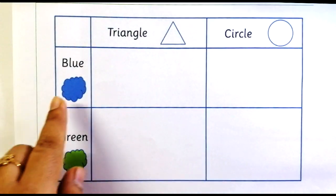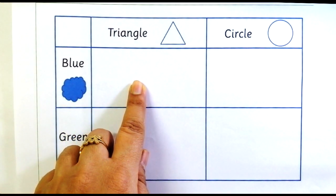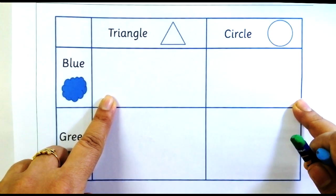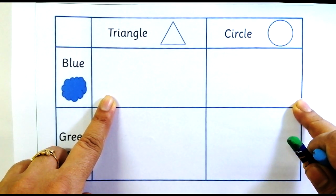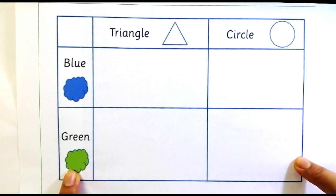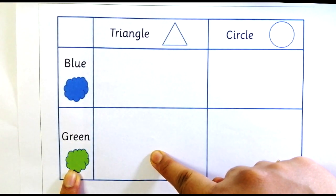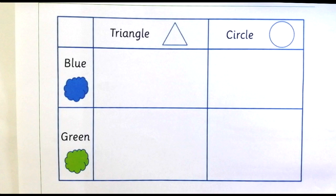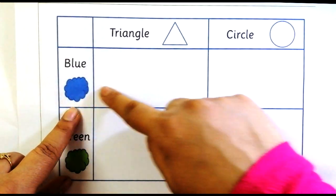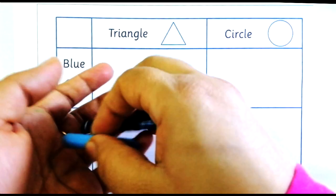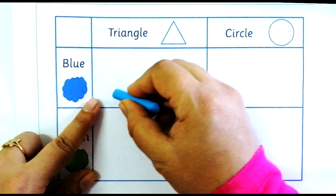You need to make a blue triangle here and a blue circle here. This row will have only blue things and this row is only for the green things. So you will get a green triangle here and a green circle here. It says blue triangle, so let me draw a blue triangle.